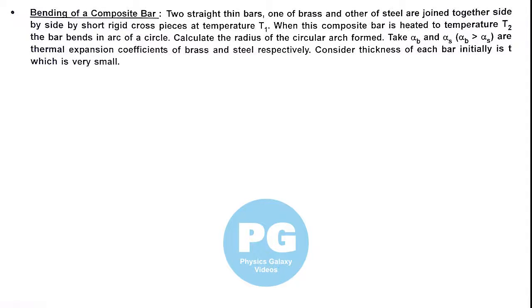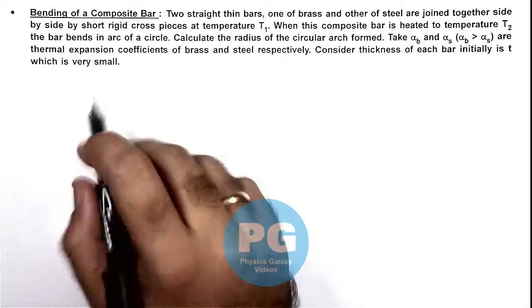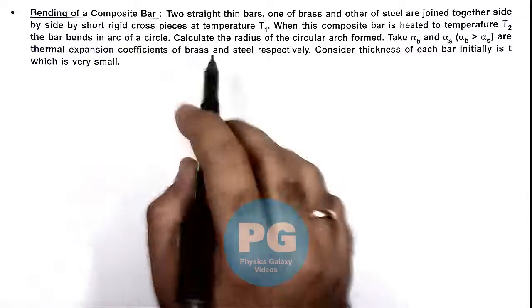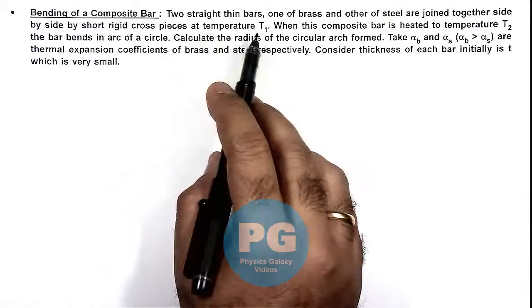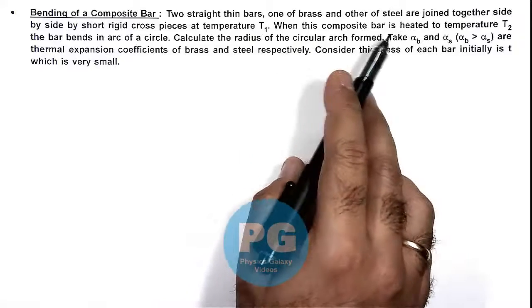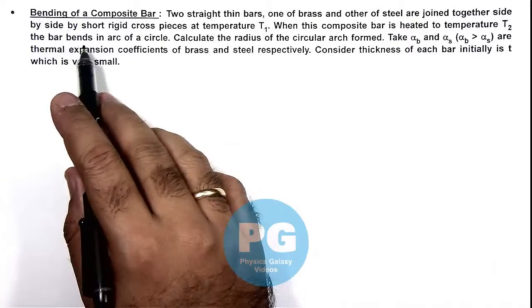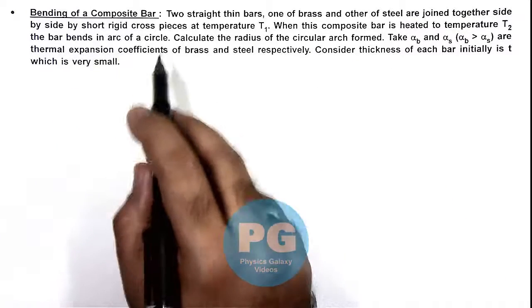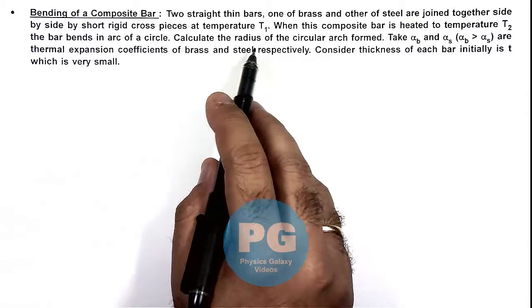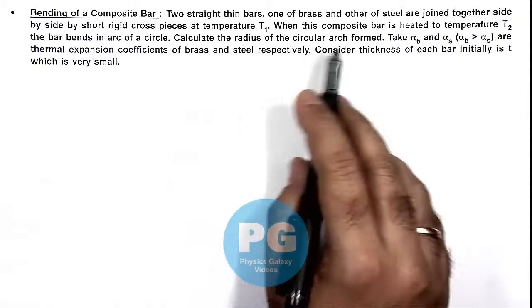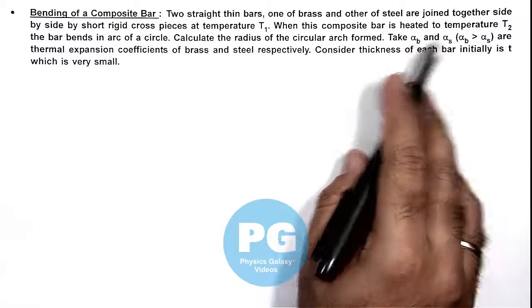In this illustration, we'll study the bending of a composite bar. We are given two straight thin bars, one of brass and the other of steel, joined together side by side by short rigid cross pieces at temperature T1. When this composite bar is heated to temperature T2,